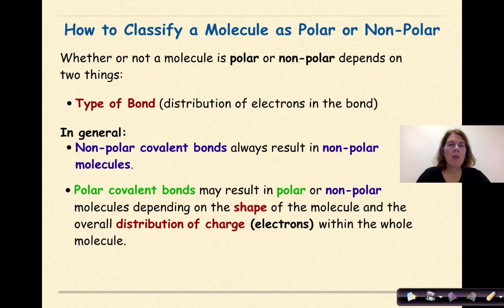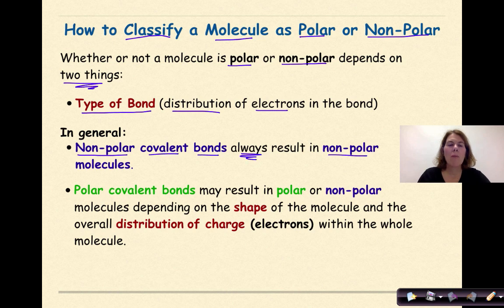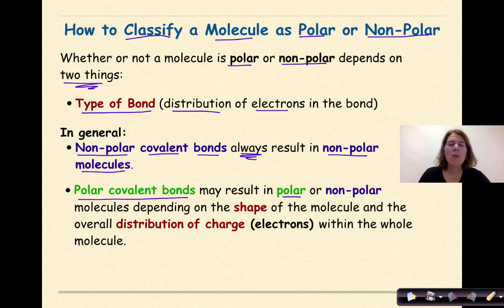Let's start off by talking about how to classify a molecule as polar or nonpolar. Whether or not a molecule is polar or nonpolar depends on two unique things. The first is the type of bond involved, and frankly looking at the distribution of electrons within the bond. In general, nonpolar covalent bonds always result in nonpolar molecules. Polar covalent bonds may result in polar or nonpolar molecules depending on the shape of the molecule and the overall distribution of charge — electrons — within the whole molecule.